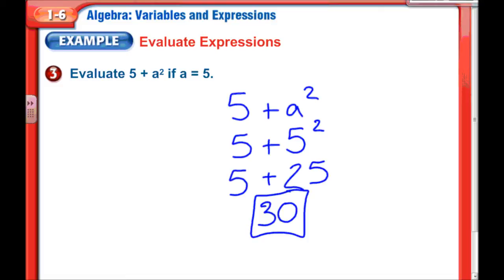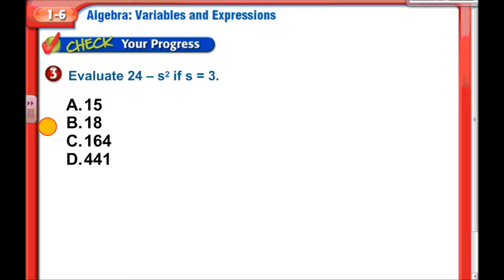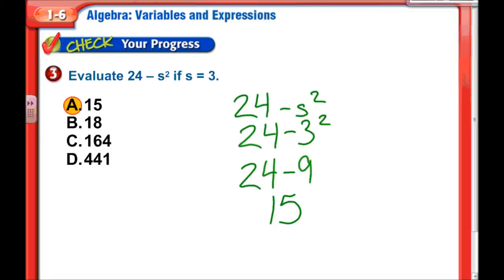Nothing too hard yet. Moving on. 24 minus s squared if s equals 3. I like to write out that problem first. Rewrite it again. This time with the number in place of the variable. Now I stop and I think about my order of operations. So the first would be my exponent. 3 squared, which means two 3s multiplied together. That would be 9. Bring down my 24 and minus. Now I just finish up with 24 minus 9. 24 minus 9 is 15.